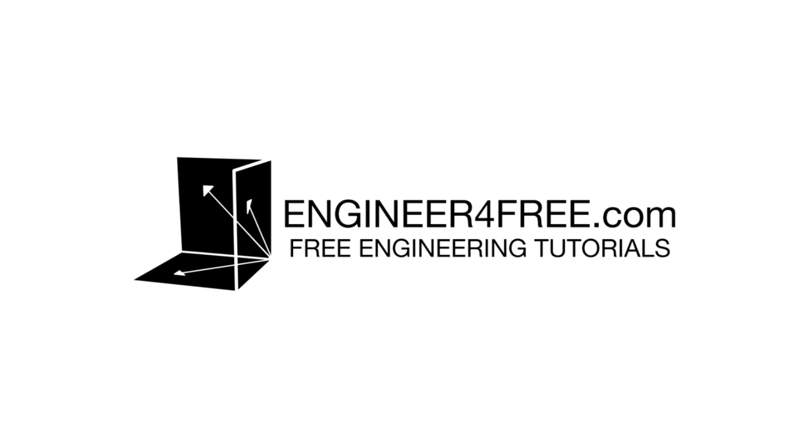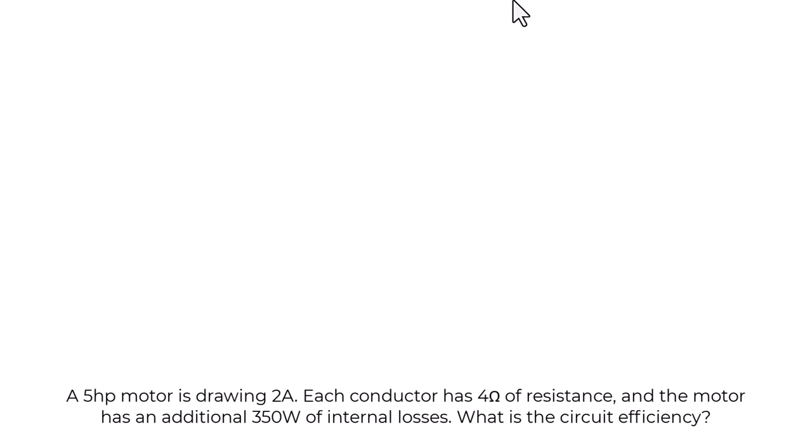All right, guys, welcome back. In this video, I'm just going to run through how to calculate circuit efficiency. So we've got a word problem here. It says a five horsepower motor is drawing two amps. Each conductor has four ohms of resistance and the motor has an additional 350 watts of internal losses. So what is the circuit efficiency?